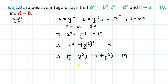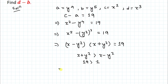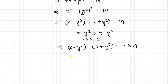Since a, b, c, d are all positive integers, the sum of two positive integers must be greater than their difference, so x plus y² is greater than x minus y². The right-hand side is 19, which is a prime number with factors 1 and 19 only. Therefore, we set x plus y² equals 19 as equation 1, and x minus y² equals 1 as equation 2.